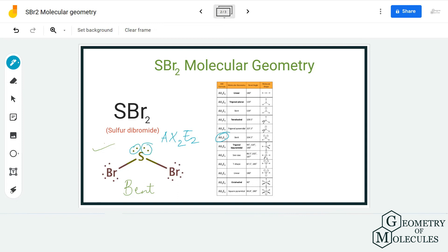As the AXN notation is AX2E2, it corresponds to bent molecular geometry on this table as well. Hence, the molecular geometry of SBr2 molecule is bent.